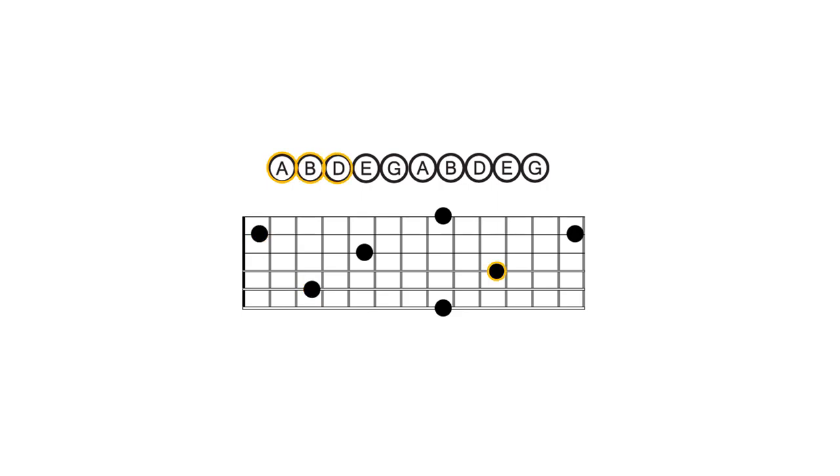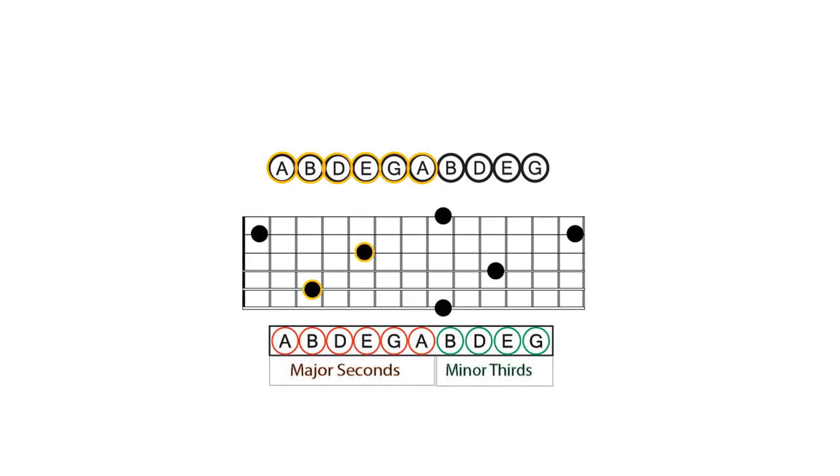If we double this letter pattern, we can derive the following pairs of string names: A-B, D-E, G-A, B-D, and E-G.